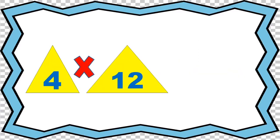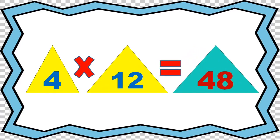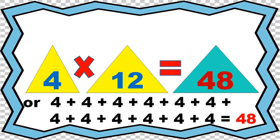4 times 12 equals 48, or 4 plus 4 plus 4 plus 4 plus 4 plus 4 plus 4 plus 4 plus 4 equals 48.